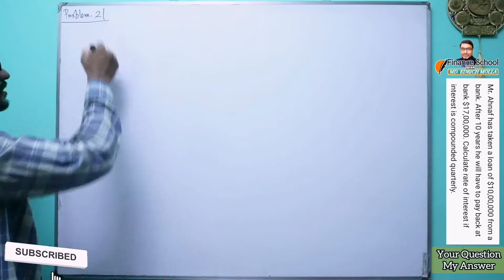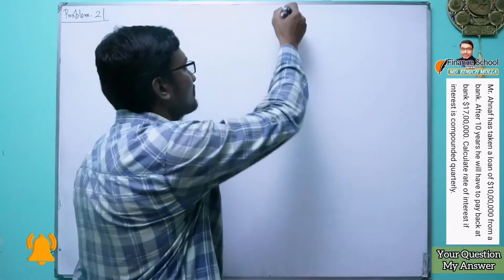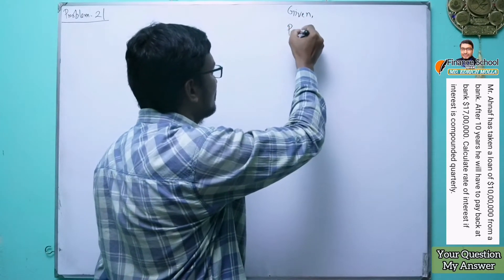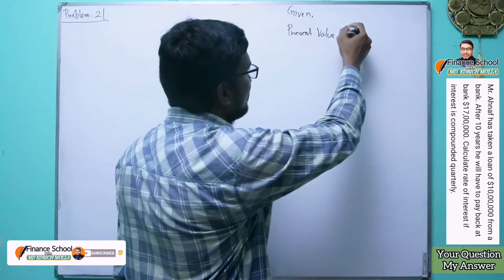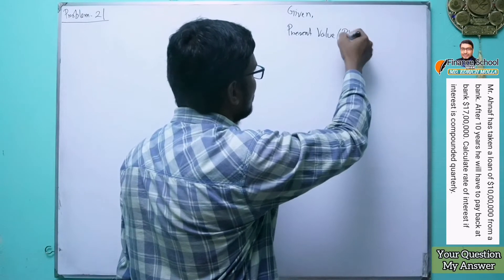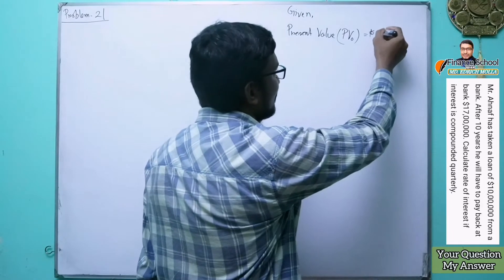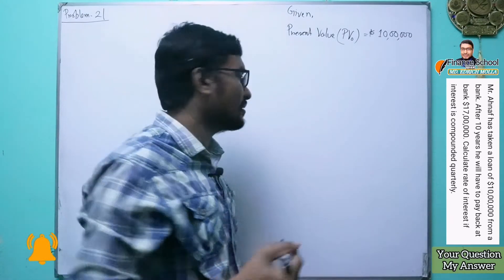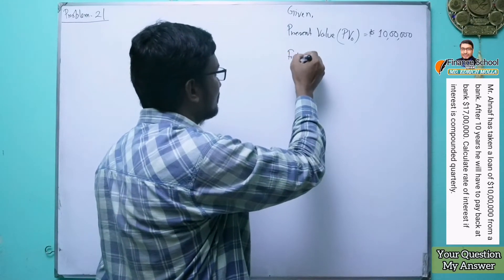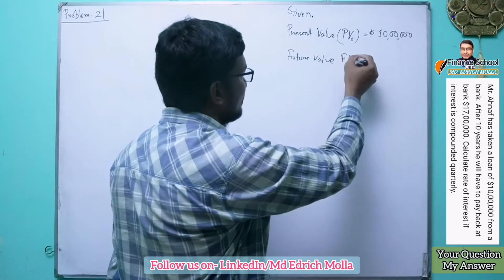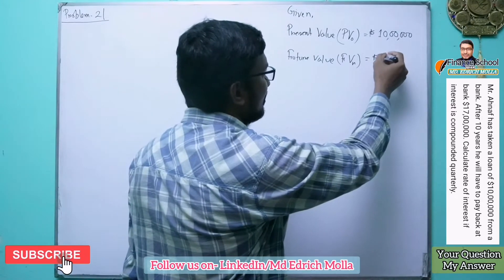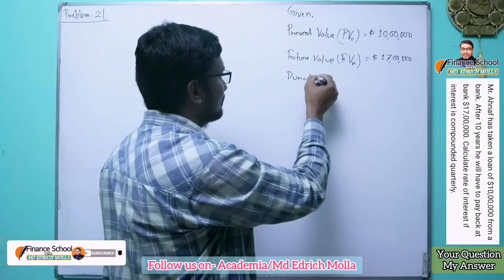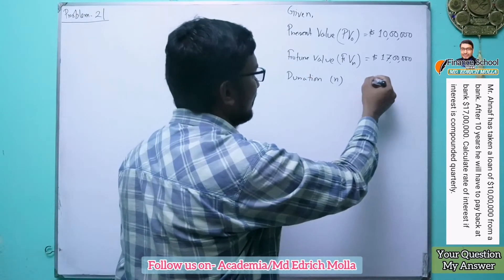Problem number two. We will write down the given information. Present value, symbolized by PV, is $10 lakh. Future value, symbolically written as FV, is $17 lakh. Duration, or number of years, symbolically written as n, is 10 years.